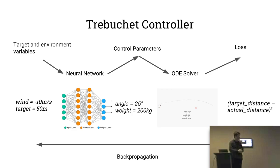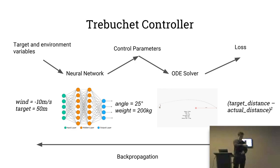We do the forward pass: give a target to the model, the model predicts the angle to use for release, the simulator runs and works out the actual distance, and we have a loss function which is just the target distance minus the distance achieved. Then we back-propagate through the whole thing — we work out the change in angle and therefore the change in the weights of the neural network. And this works.